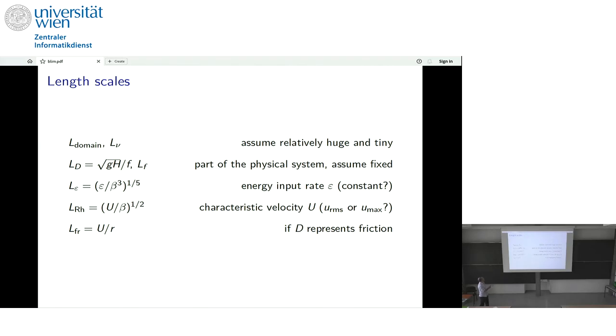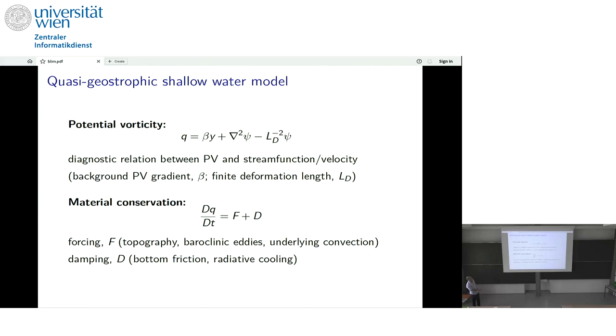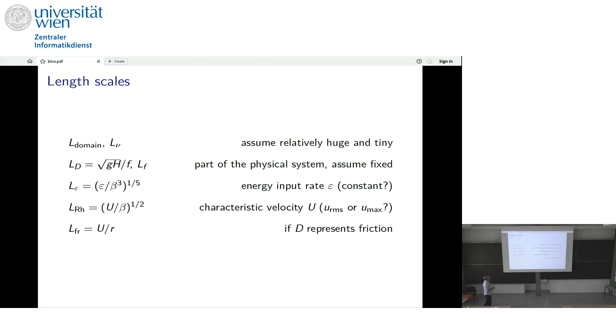So I'm going to be including forcing. I'm basically going to be leaving out the damping, but that's kind of an expedient. It's an extremely simple system, and yet there are seven independent length scales. We can combine to make six independent non-dimensional parameters.